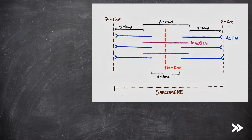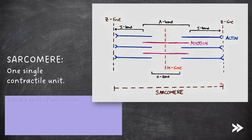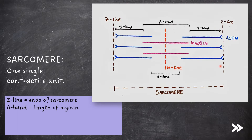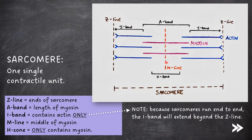The structure of a myofibril can be split into different sections. We have something known as a sarcomere, which is a single contractile unit. The Z-line marks the end of the sarcomere. Within one sarcomere, we have the A-band, which is the length of myosin. We have the I-band, which contains actin only. Note that, because sarcomeres run end-to-end, the I-band will extend beyond the Z-line. The M-line is the middle of the myosin. And finally, we have the H-zone, which contains myosin only.